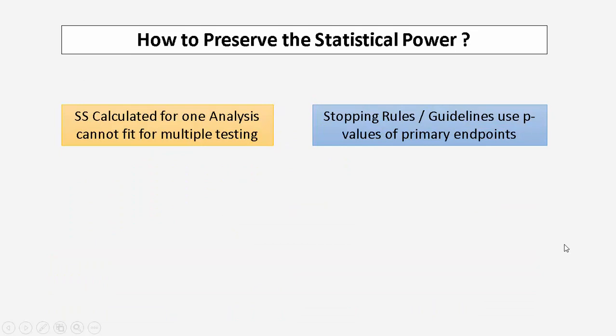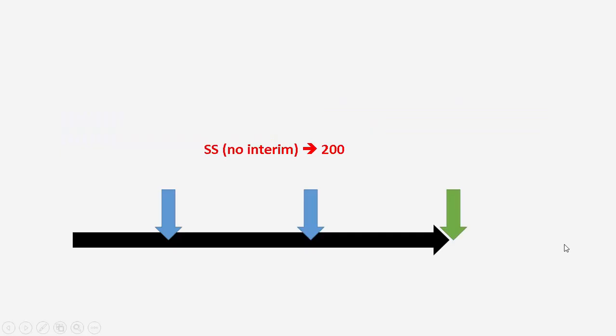You must take into consideration that the sample size calculated for one analysis cannot fit for multiple testing. There are stopping rules or guidelines that use p-values of primary endpoints to help you take the decision whether to proceed or to stop the trial. We will discuss two stopping rules here.